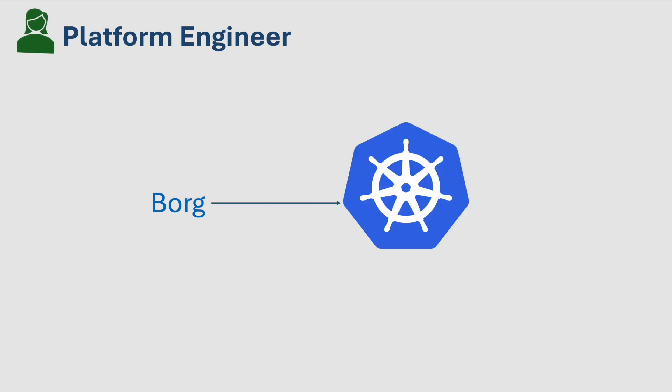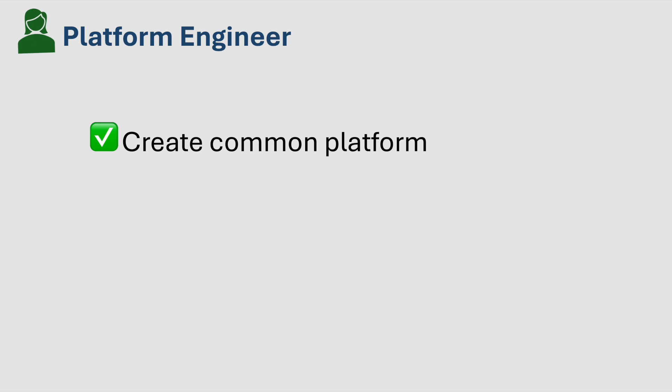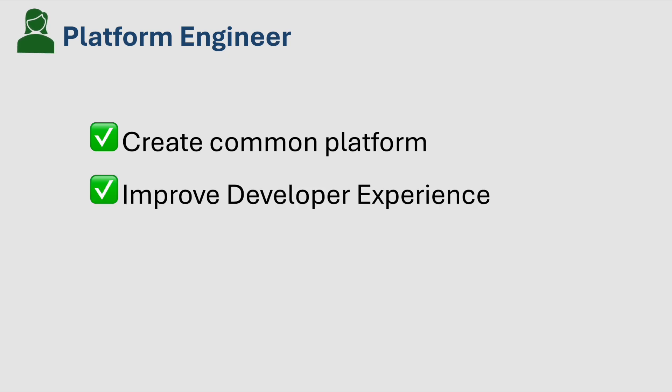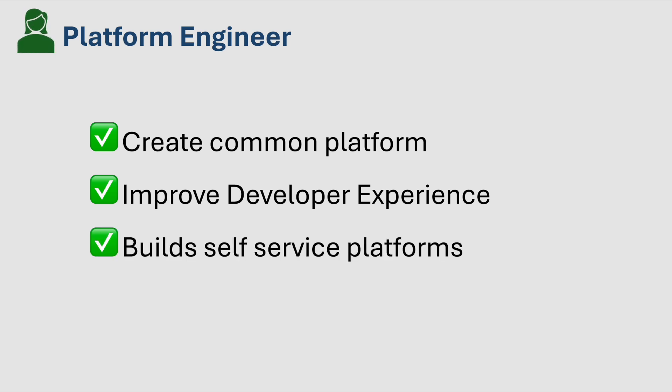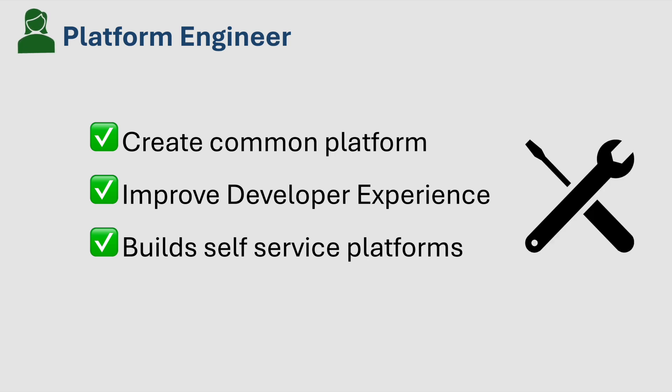Next, let's talk about Platform Engineering. If DevOps and SRE focus on speed and reliability, Platform Engineering focuses on making life easier for developers. Platform engineers build internal tools and platforms that allow developers to deploy code without worrying about the underlying infrastructure. For example, before Kubernetes became widely adopted, Google developed an internal platform called Borg to manage containerized workloads. Borg was designed by Platform Engineers to handle scheduling, deployment, and scaling across thousands of machines. A platform engineer mainly focuses on creating a common platform for all development teams to reduce duplicate efforts, improve developer experience, and build self-service platforms so developers can work without worrying about infrastructure.